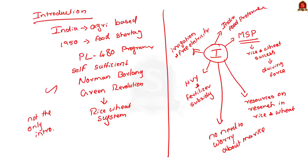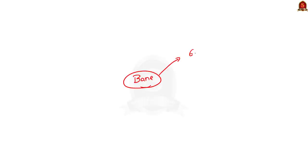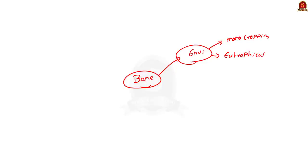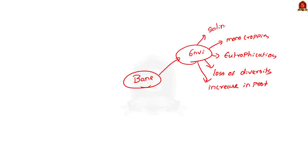Now let us move to the second part: in spite of success, how did the rice-wheat system become a bane in India? First, the environmental aspect. You can mention monocropping and its role in depleting soil nutrition, how excessive use of fertilizers has led to eutrophication in various water bodies of India, how excessive use of high-yielding seeds is leading to the disappearance of native varieties, and how monocropping has led to increased pests and therefore increased use of pesticides. You can also mention the salinization of land in Punjab and Tamil Nadu due to overuse of groundwater.